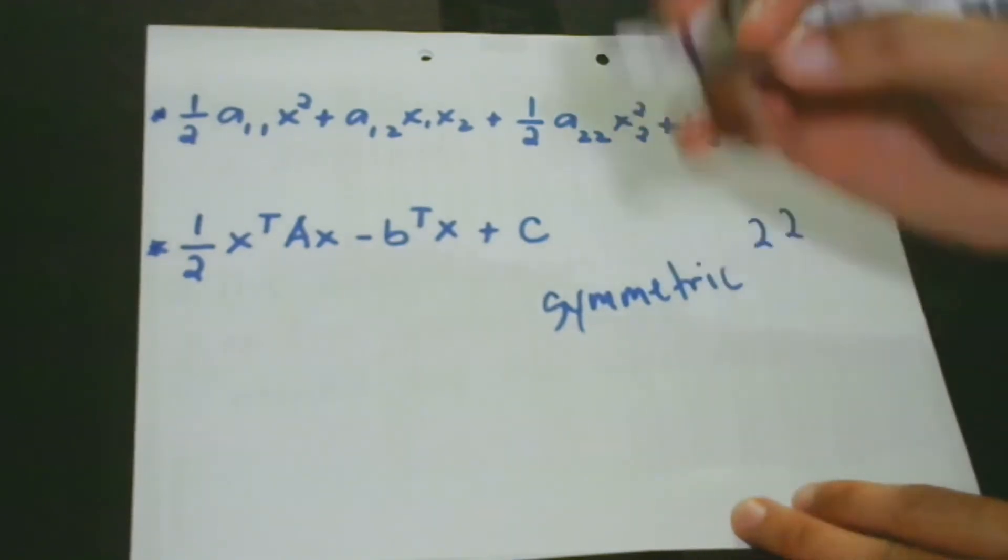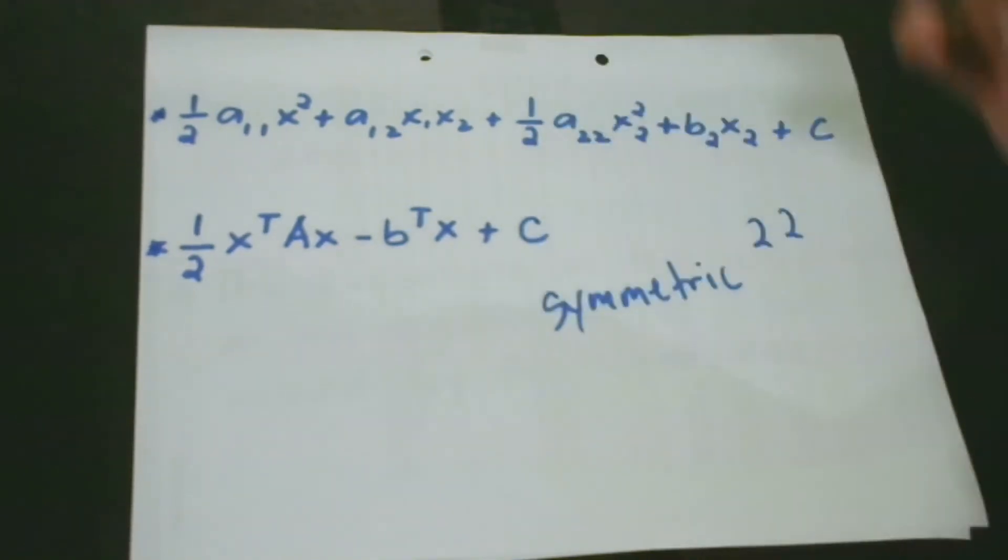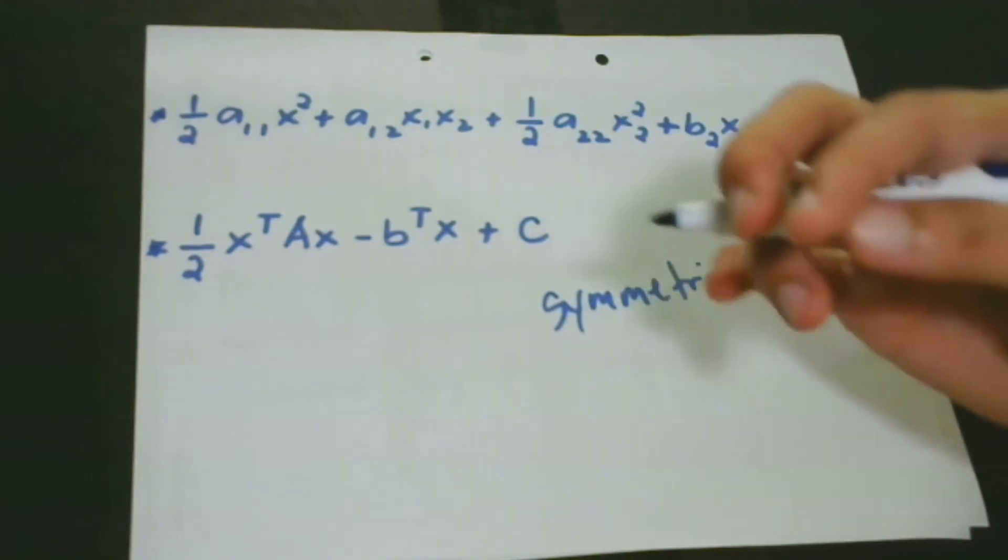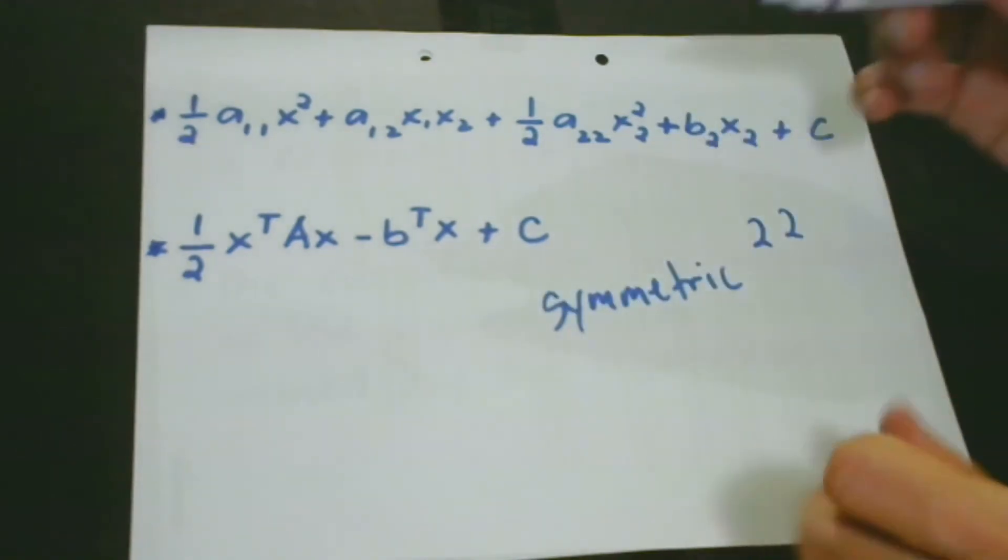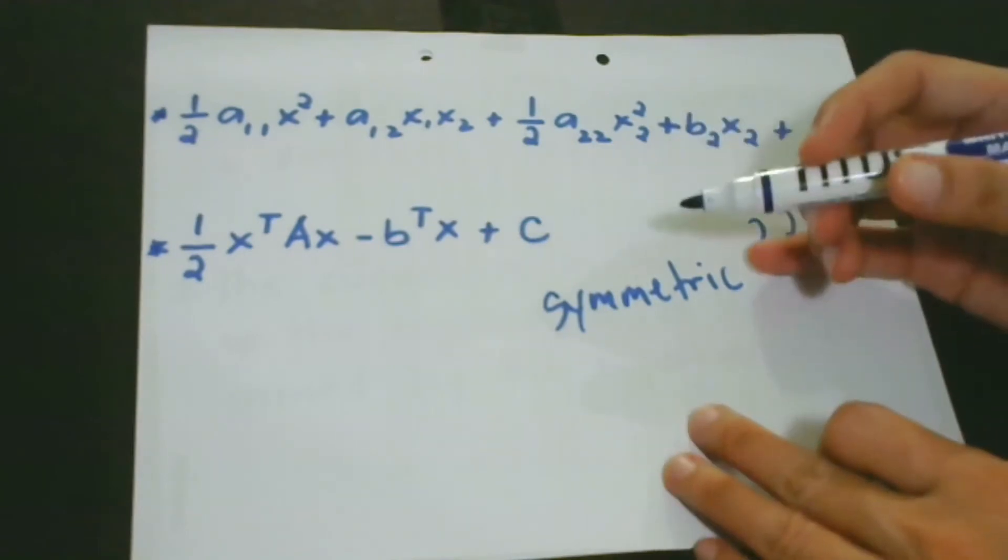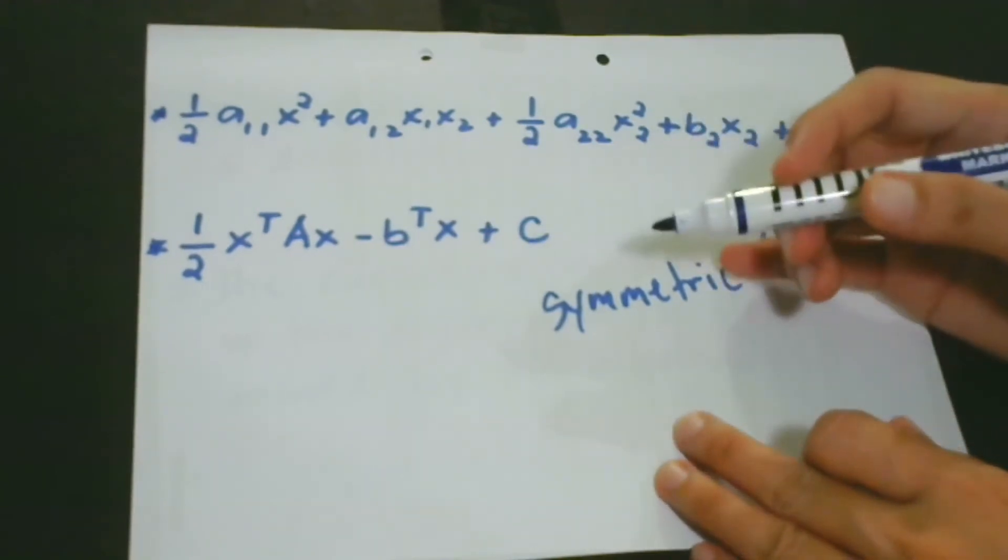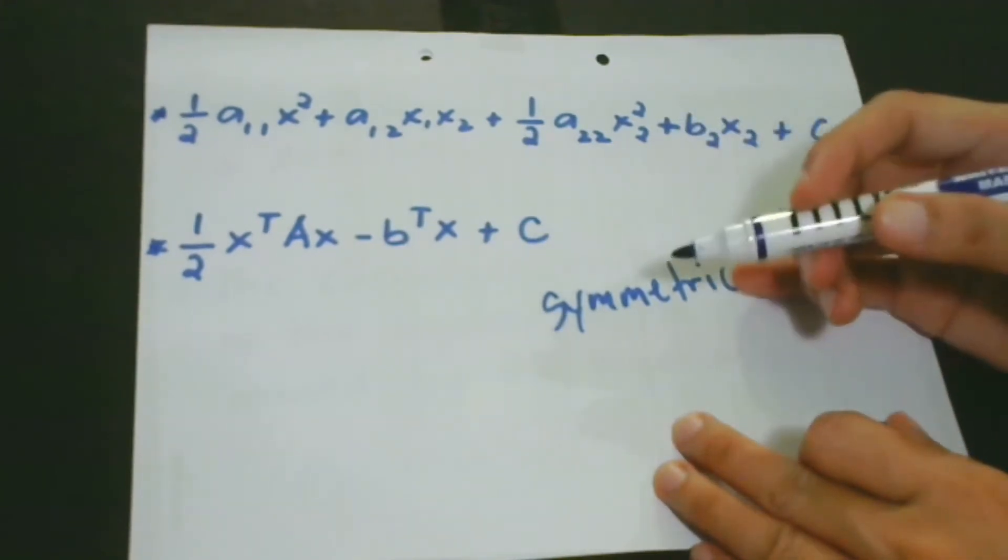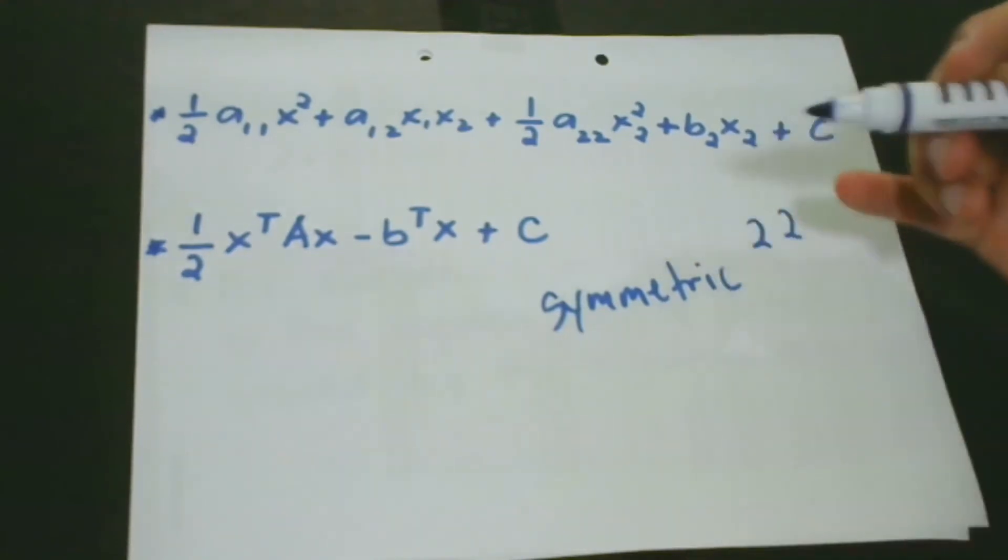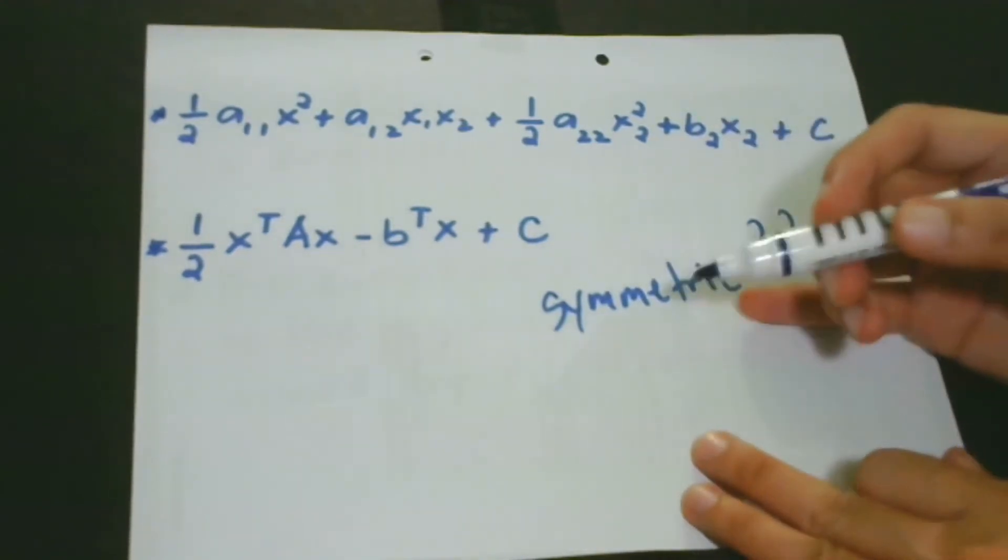If you have a deeper understanding of quadratic form, then you have an edge because it is the key to understanding Hessian.